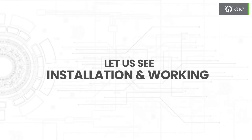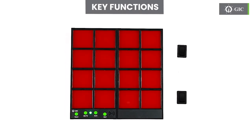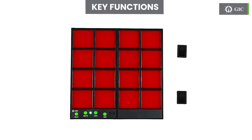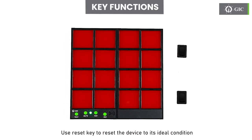Let us see the installation and working of the alarm enunciator. Use the test key to test the device. Use the mute key to mute the buzzer. Use the acknowledge key to acknowledge. Use the reset key to reset the device to its ideal condition.